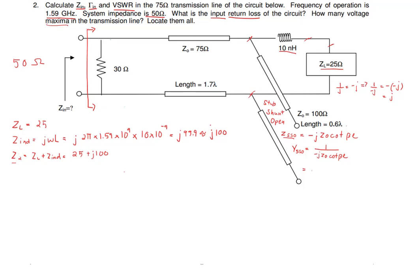With Z0 = 100, the admittance term is j times (1/100) times tan(theta*L). Now let's calculate the electrical length beta*L. That is 2*pi over lambda, and the length is 0.6 lambda, so beta*L = 1.2*pi. The lambdas cancel out.